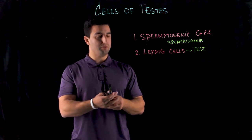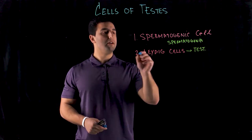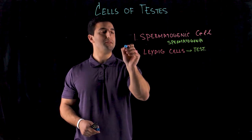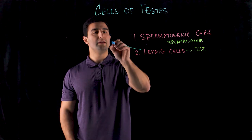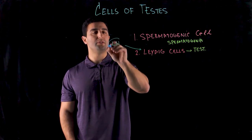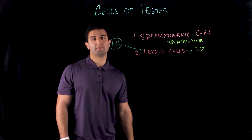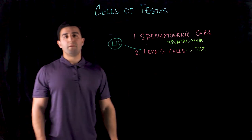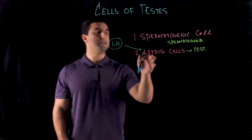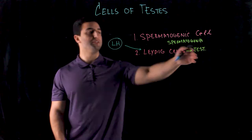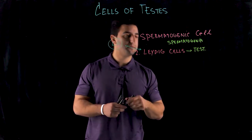The hormone involved in stimulating the Leydig cells is LH — luteinizing hormone — which is secreted from the anterior pituitary. It comes in and binds the Leydig cells in order for testosterone production to take place.